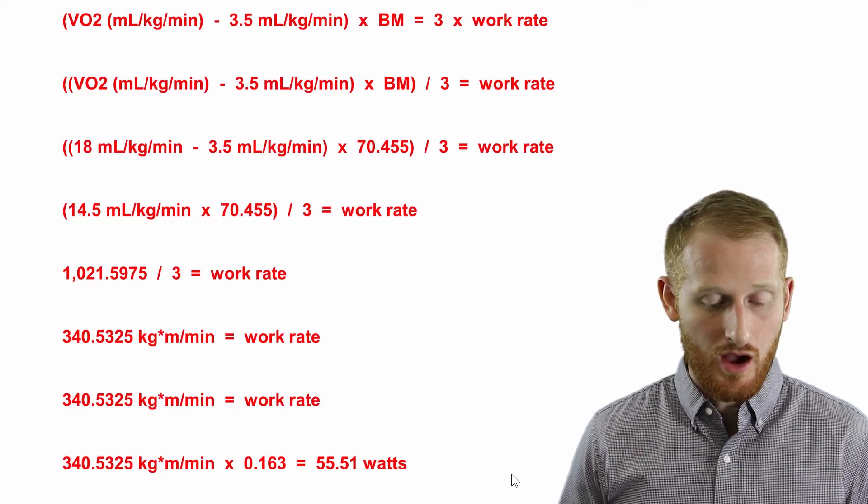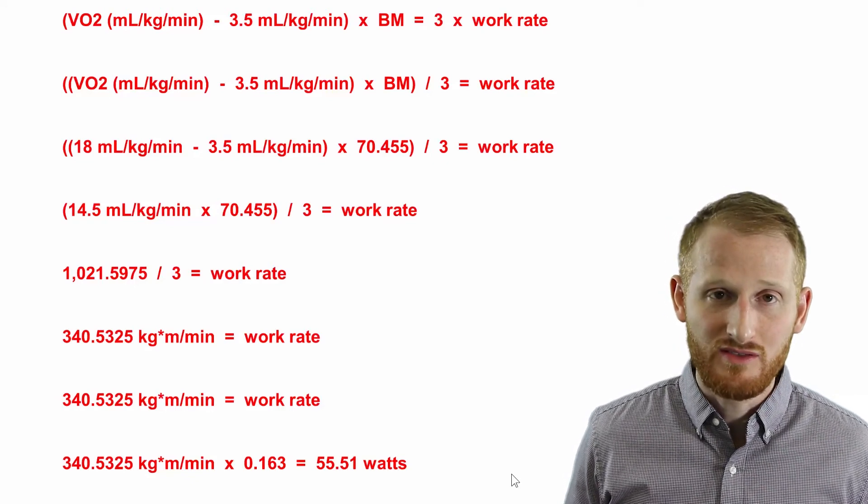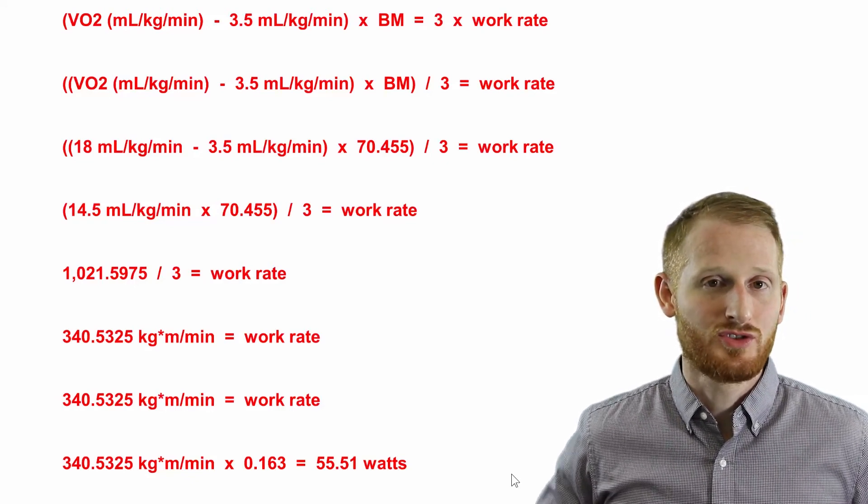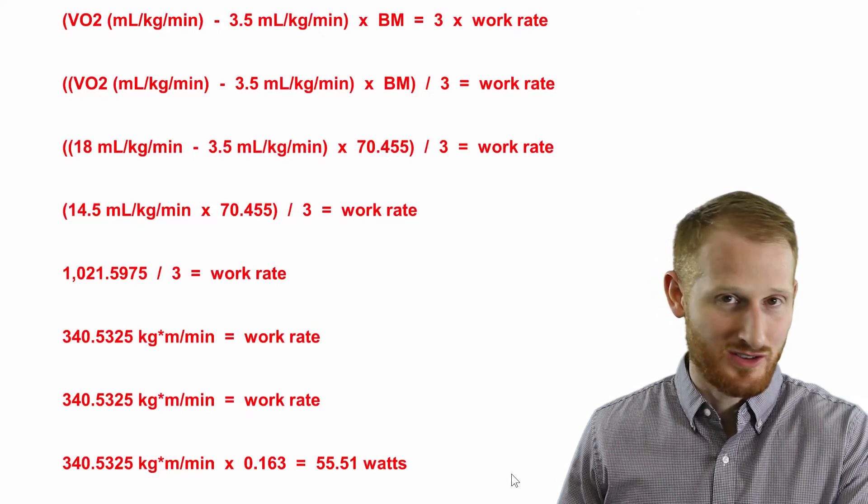So in this situation he'll need to do arm cycling at about 55 to 56 watts in order to get the VO2 that was prescribed to him by his trainer or by you if you were his trainer. So there's a little bit of rearranging of the ACSM formula that's necessary in order to get work rate, but it's still a fairly straightforward calculation. So I hope this was helpful though, and if you have any questions you can put those in the comment section below and I'll try to get back to you. Otherwise please come back and watch another video. Thanks.